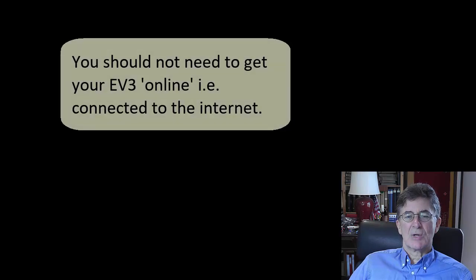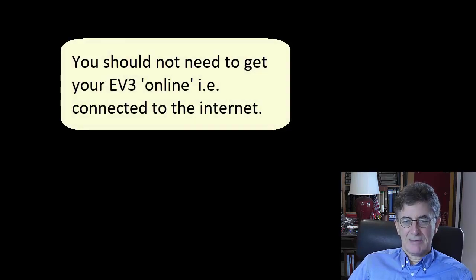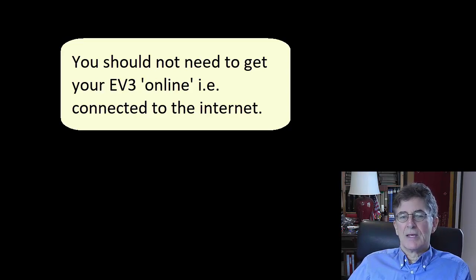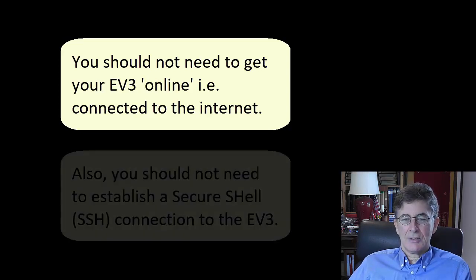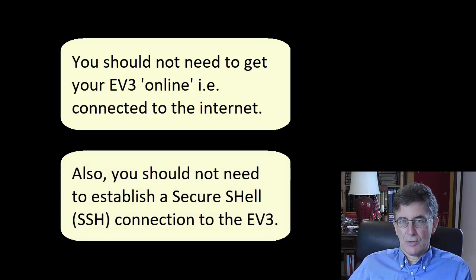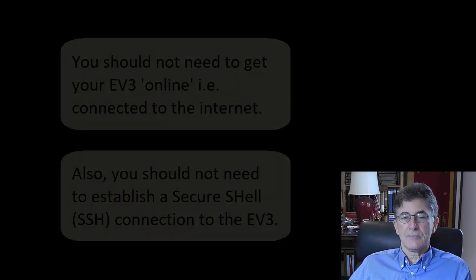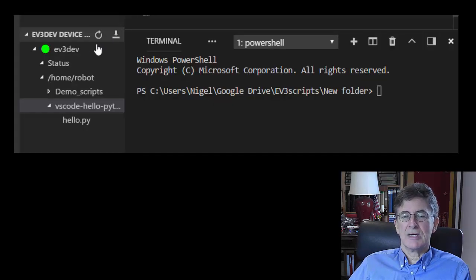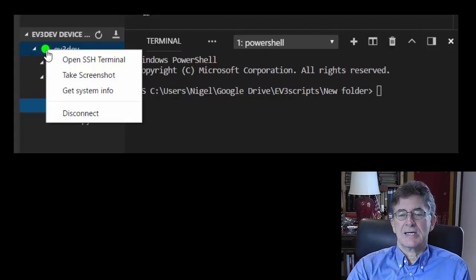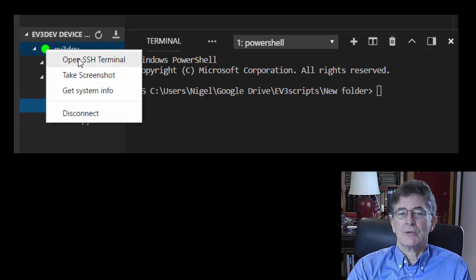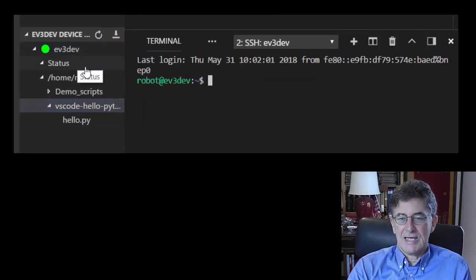Note that this video is intended for EV3 Python beginners, so I won't be explaining how to get the EV3 online, i.e. connected to the internet via the computer. You really shouldn't need to connect the EV3 to the internet to use the VS Code workflow described in this video, and neither should you need to establish a Secure Shell or SSH connection between VS Code and the EV3. If you are a more advanced user and do want to use SSH, then you should refer to ev3python.com and ev3dev.org.